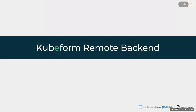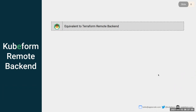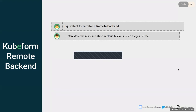First, let's look at KubeForm remote backend. It is equivalent to Terraform remote backend. Basically in Terraform and also in KubeForm there are two types of backend: one is local and another one is remote. The default backend is local backend. In the local backend case, the resource state is stored under the spec.state field of a KubeForm resource YAML.